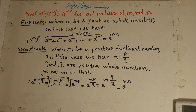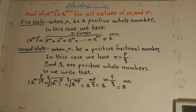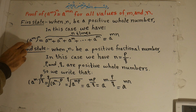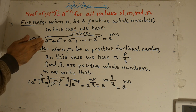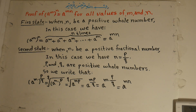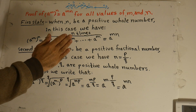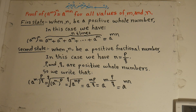For all values of m and n. First case: when n is a positive whole number. In this case, a to the power of m, all to the power of n, is equal to a to the power of m plus a to the power of m, repeated n times. So the result is a to the power of m times n.